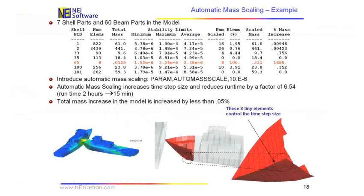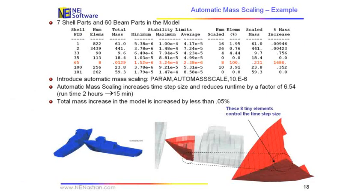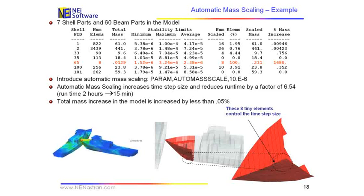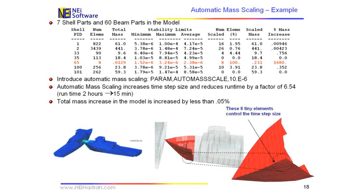And in particular, this example shown here on the screen right now got a very strong warning because it increased the mass in that part by 1,680%. But obviously I could ignore that because it wasn't really relevant, considering there were only eight elements in the whole ship.